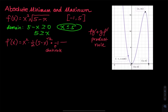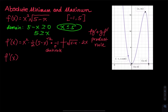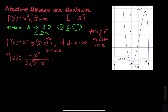Then, plus for the product rule: g is square root of 5 minus x, and the derivative of f is 2x. So f prime of x equals negative x squared divided by 2 times the square root of 5 minus x, plus 2x times square root of 5 minus x.